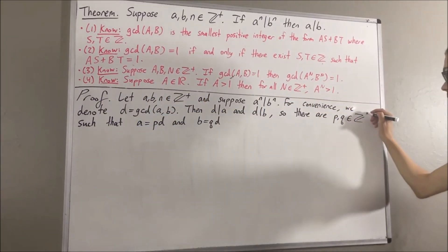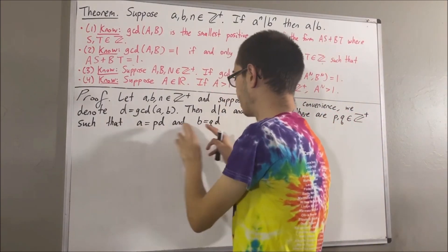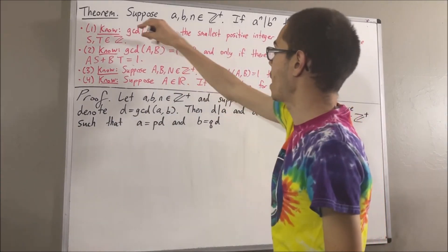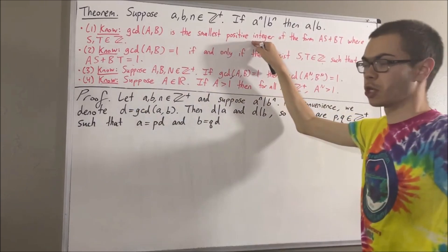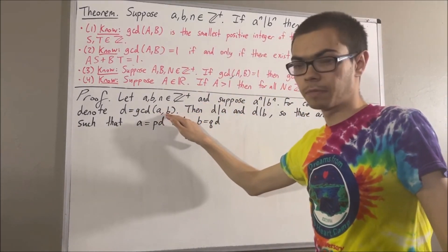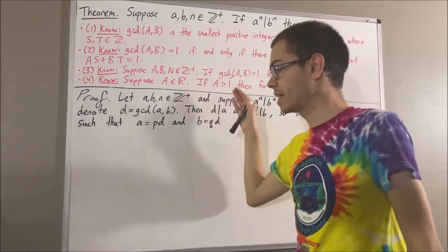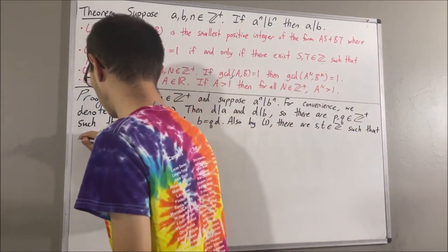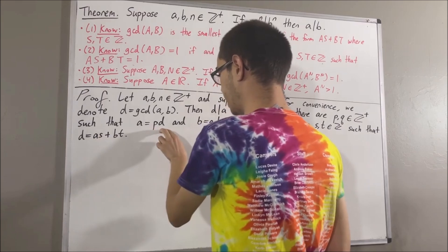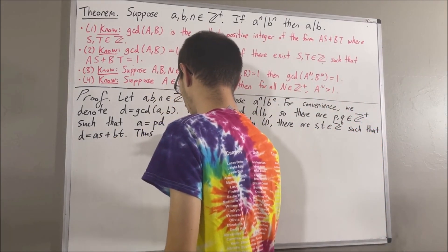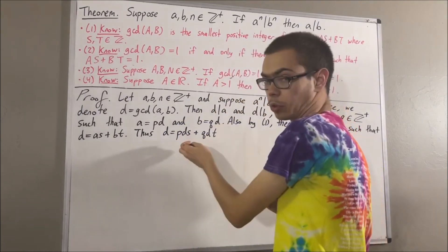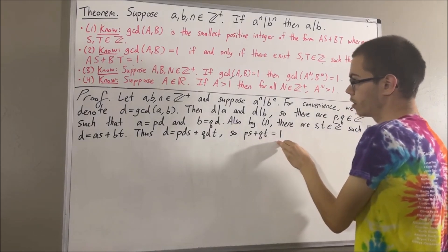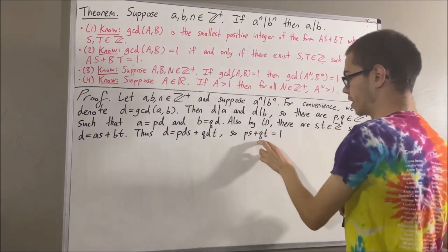In fact, p and q must be positive because a and d are positive, and b and d are positive. In addition, since d is the greatest common divisor of a and b, we can apply our first fact: d is the smallest positive integer of the form as plus bt, and therefore there exist integers s and t such that d is equal to as plus bt. If we substitute a for pd and b for qd, and then divide both sides by d, we get ps plus qt equals 1. Since ps plus qt is equal to 1, by our second fact, the greatest common divisor of p and q is equal to 1.